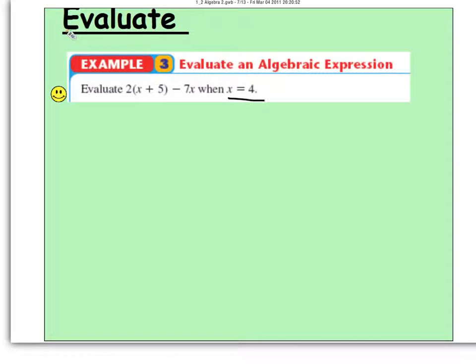So if they're telling us x is equal to 4, all I'm going to do is take that 4 and put it in everywhere I see an x. That'll give us 2 times 4 plus 5 minus 7 times 4.